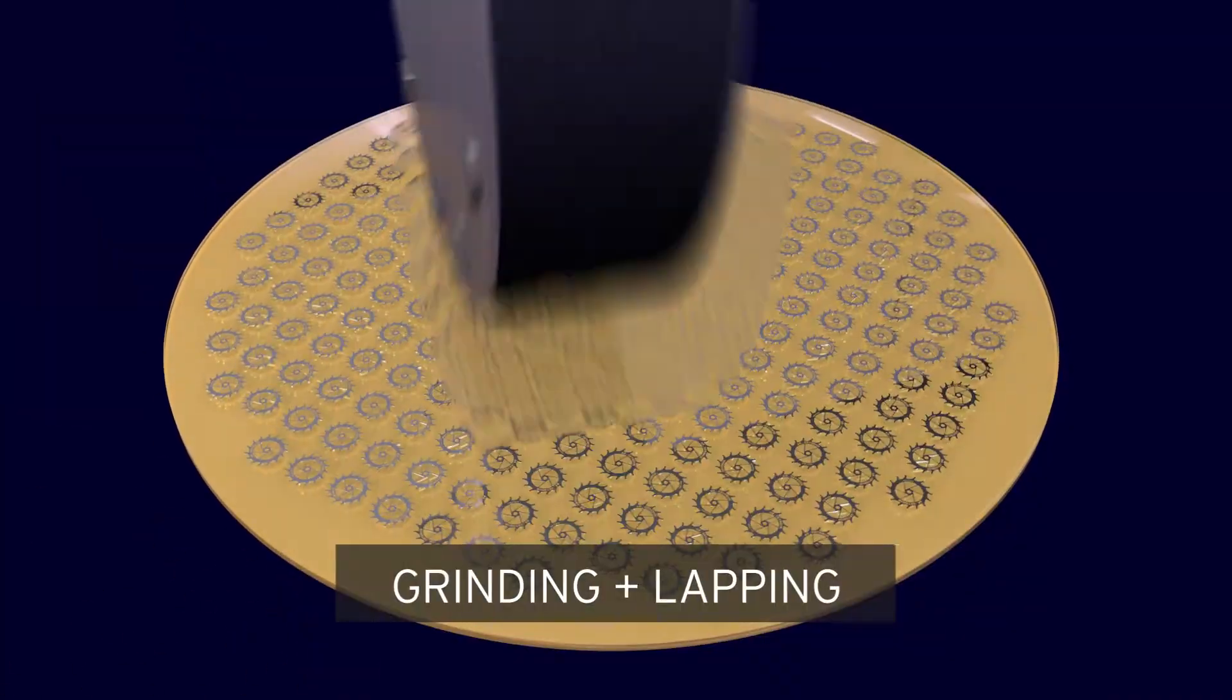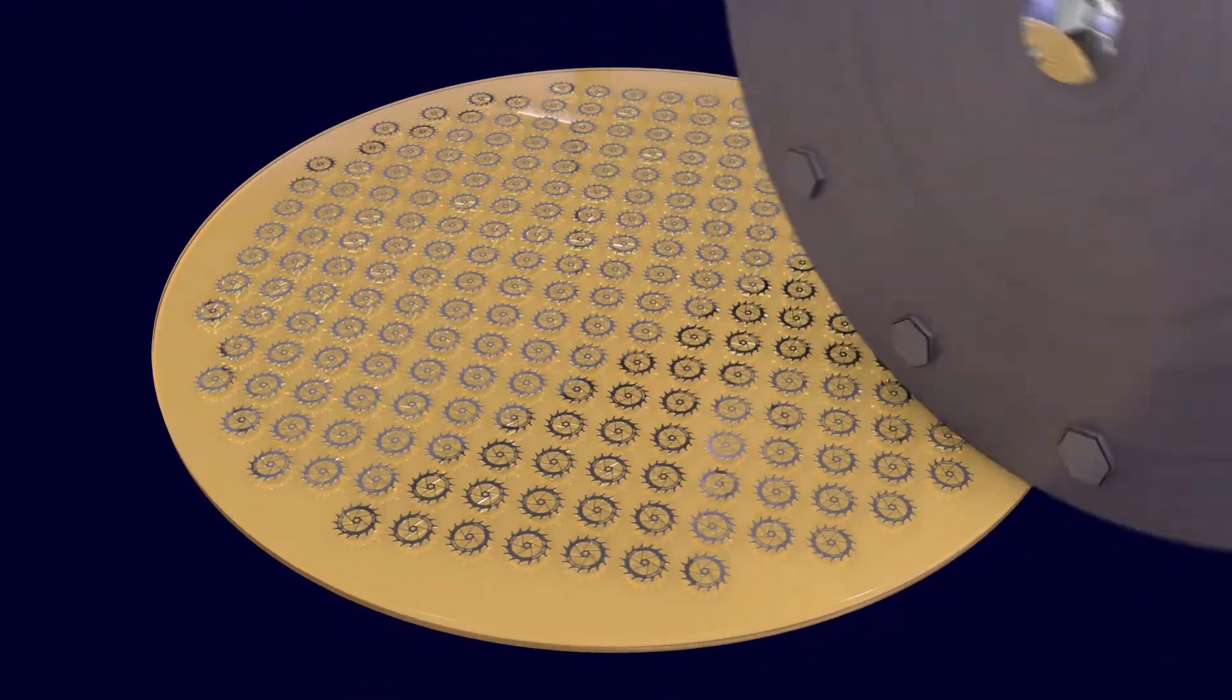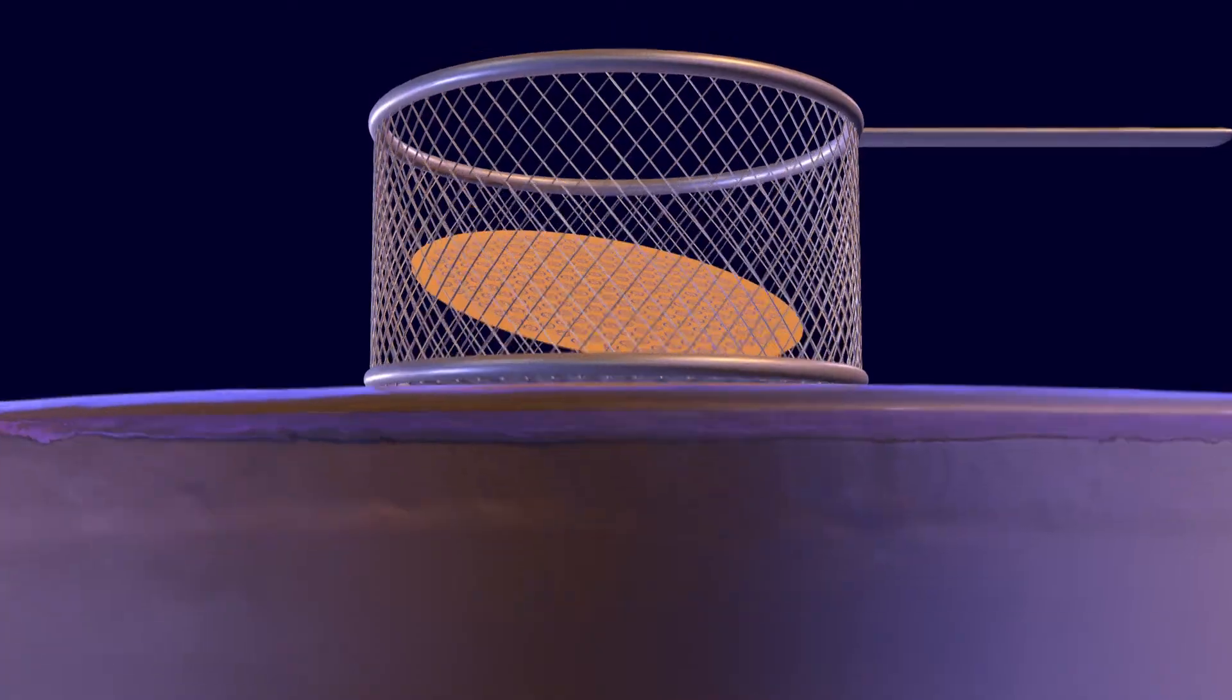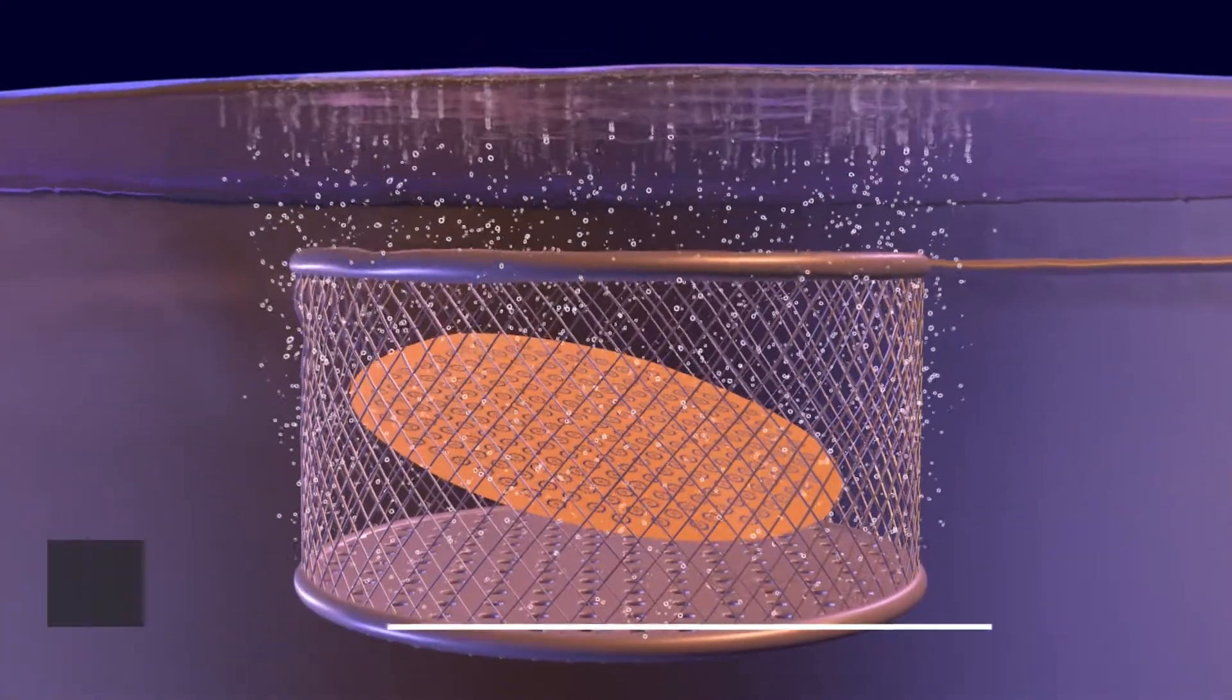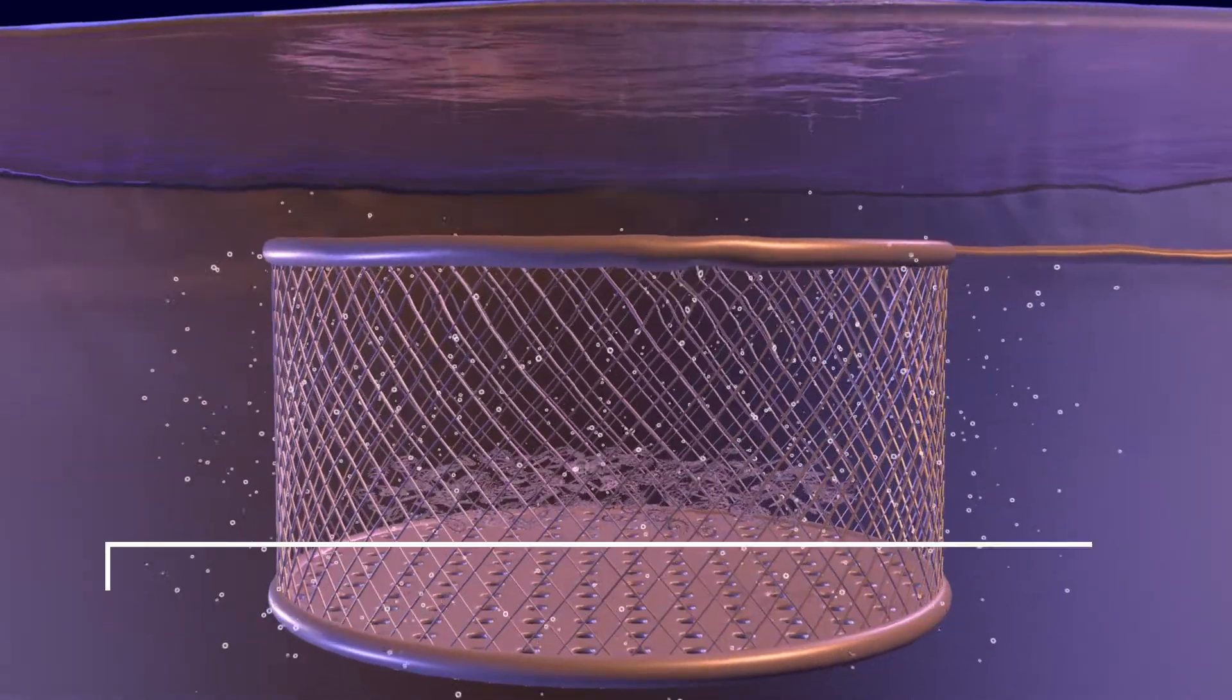The component's final thickness is guaranteed by grinding and lapping of the wafer in order to achieve the part specification. The final step is to dissolve the photosensitive resin and the wafer, thereby releasing the components.